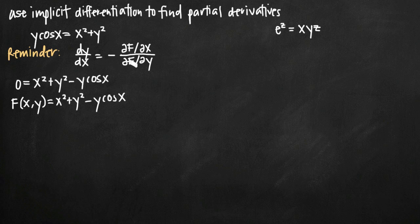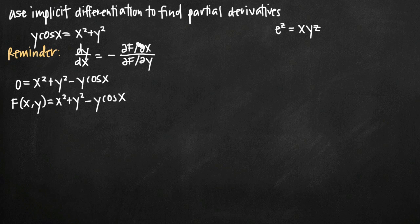The reason we set up capital F of x, y is because our formula requires partial derivatives of this function. Since we have an equation in terms of x and y, we want the derivative of y in terms of x, which is dy over dx. To get dy over dx, we're going to need the partial derivatives of F with respect to x and with respect to y. Let's go ahead and find these two separately.